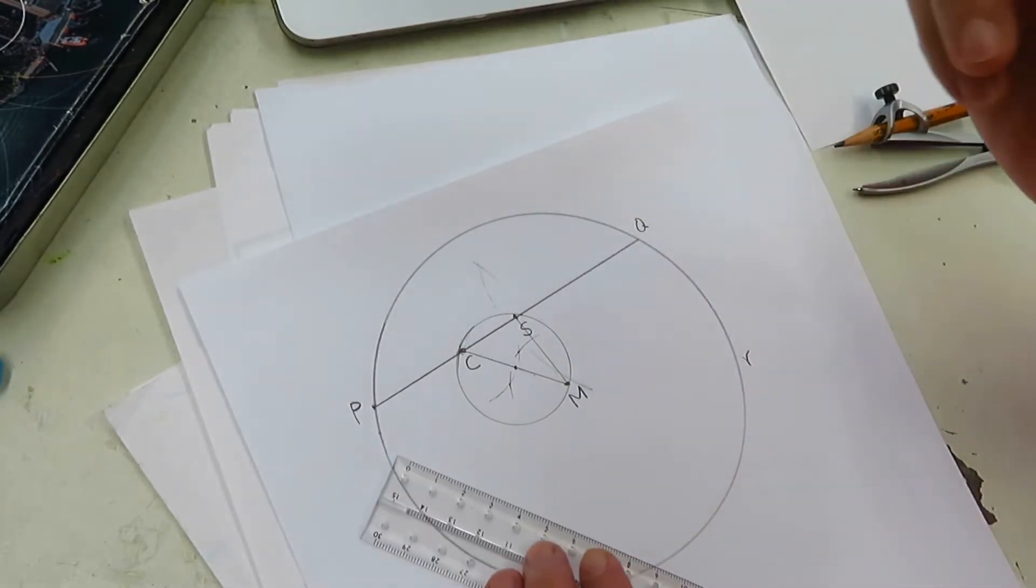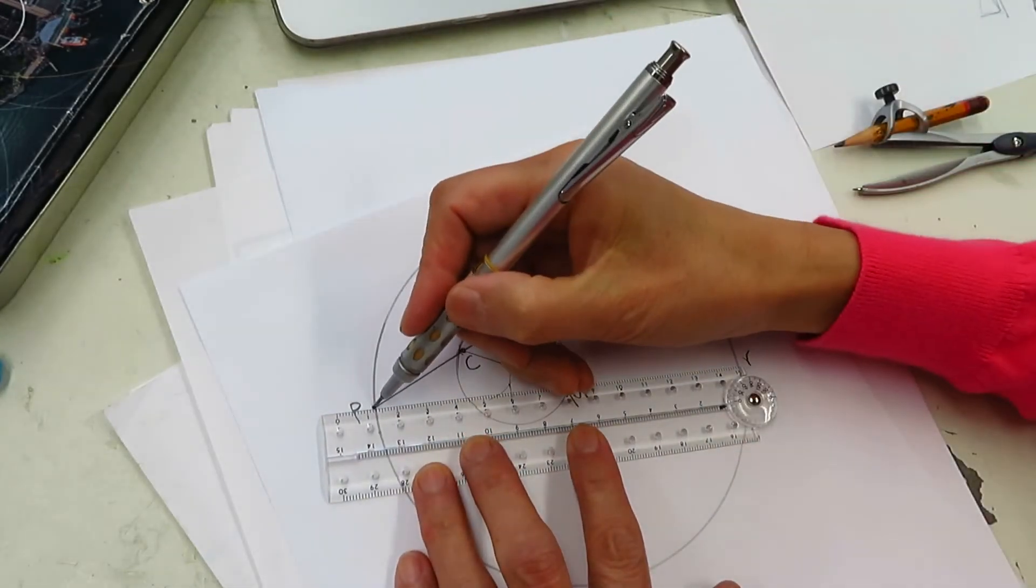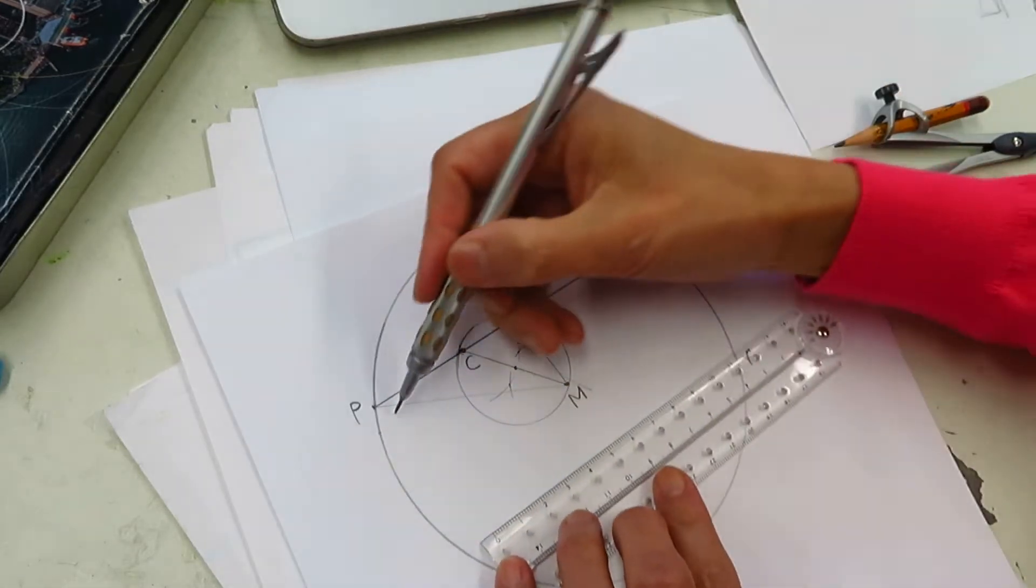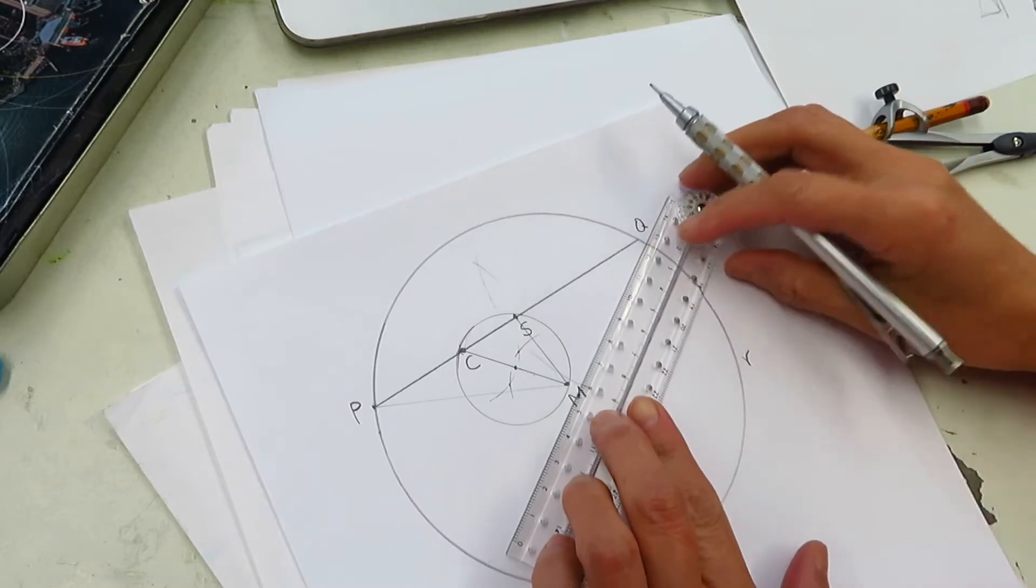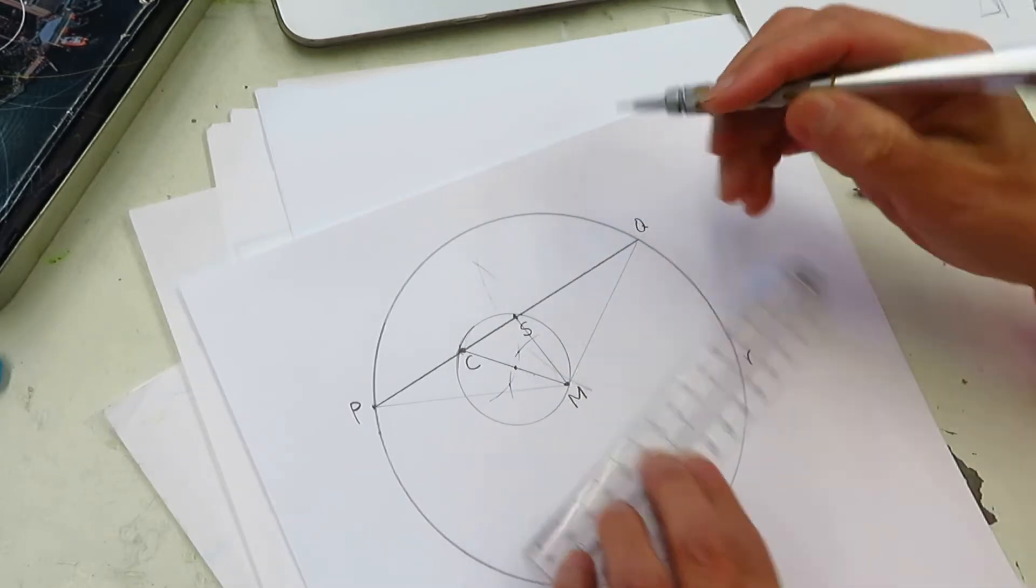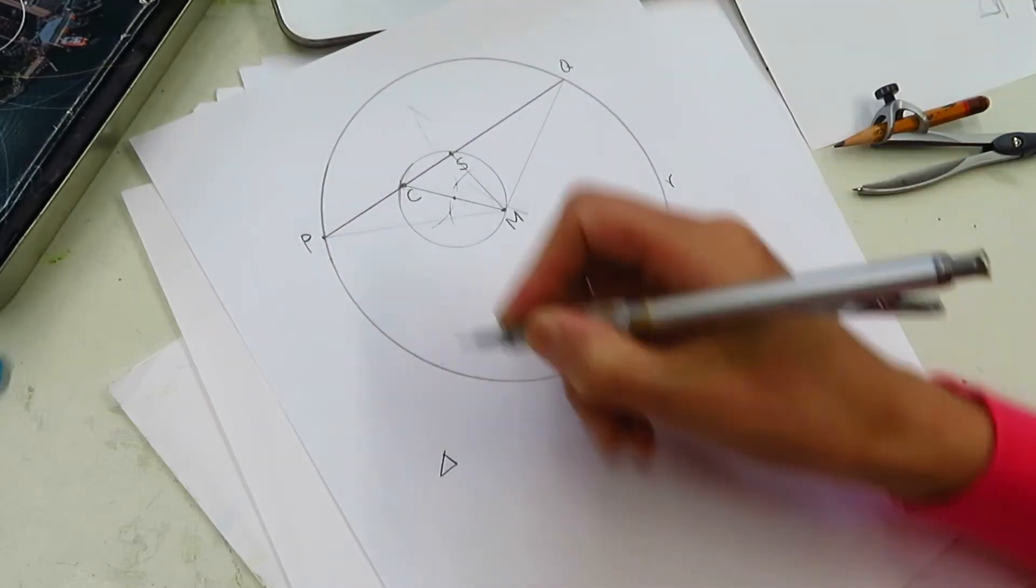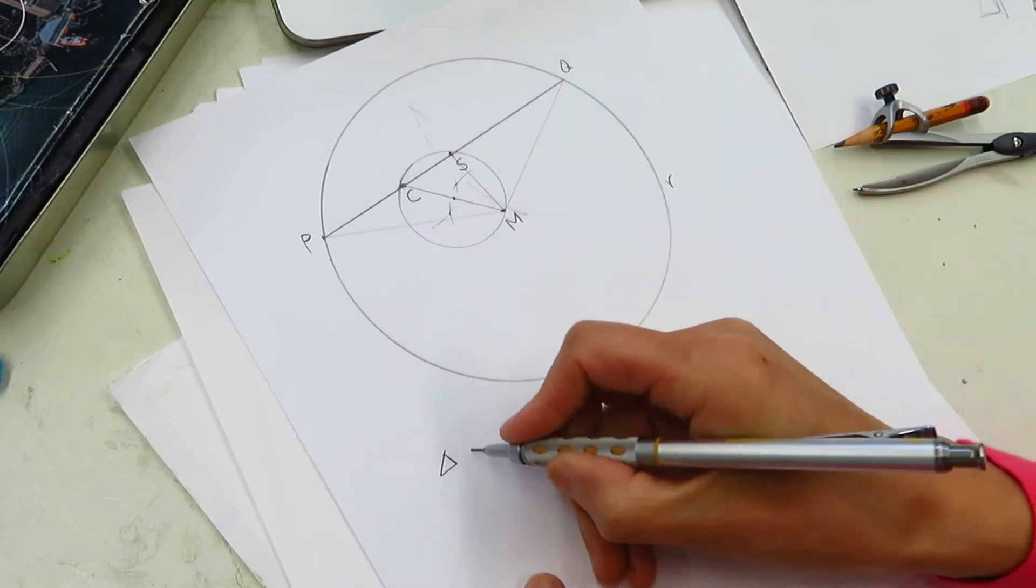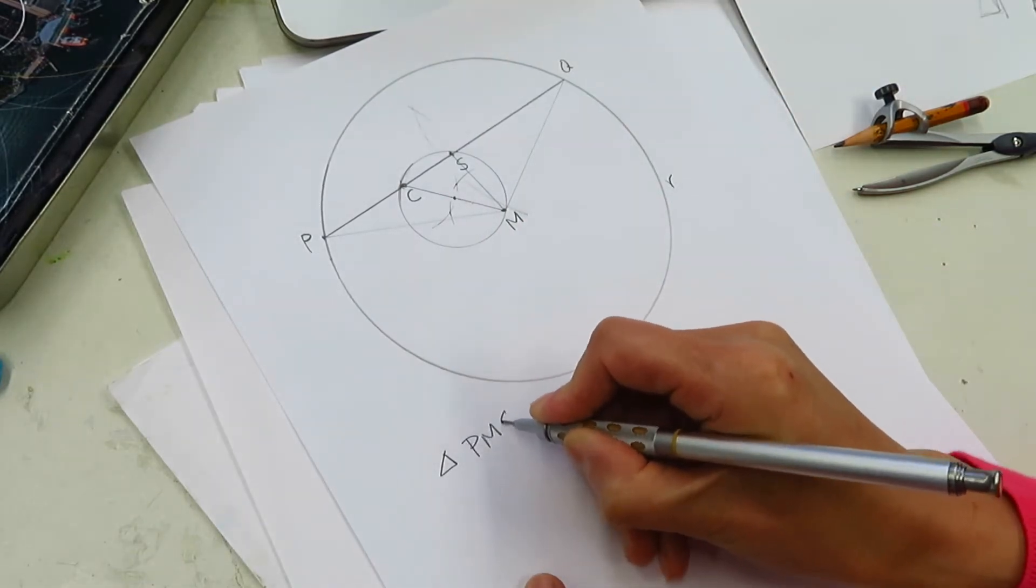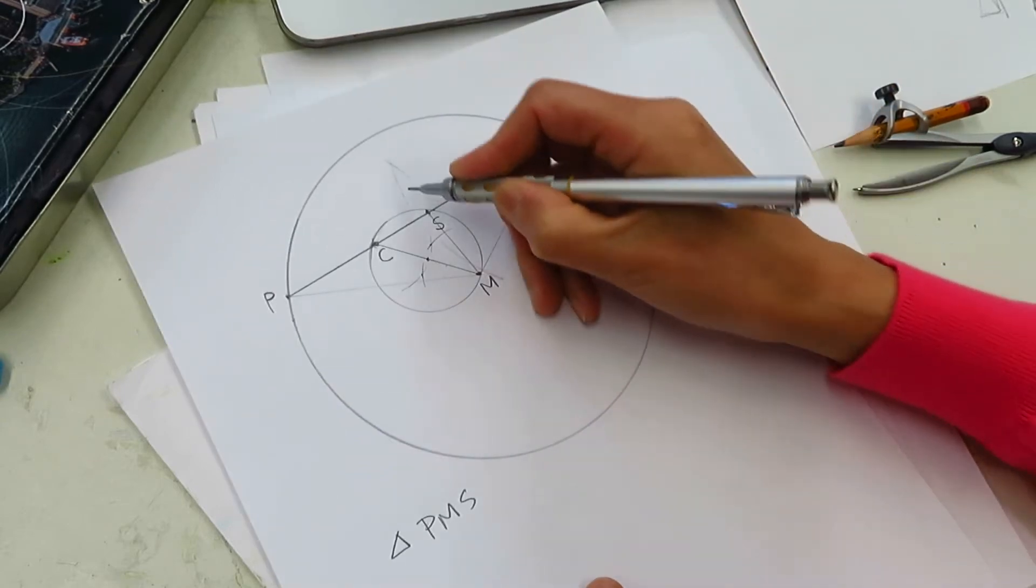Okay, now we will need one auxiliary line. So we connect PM and QM. In triangle, in triangle PMS and the triangle QMS.